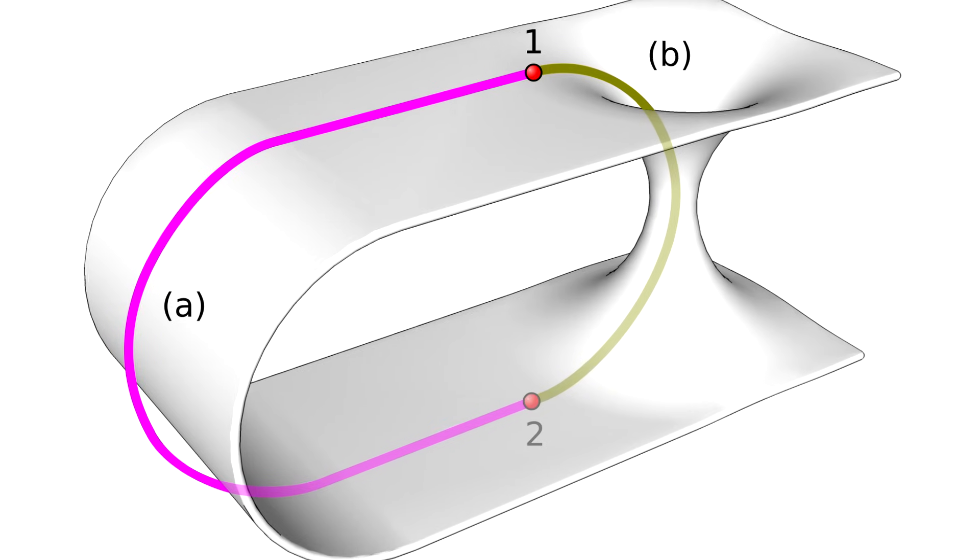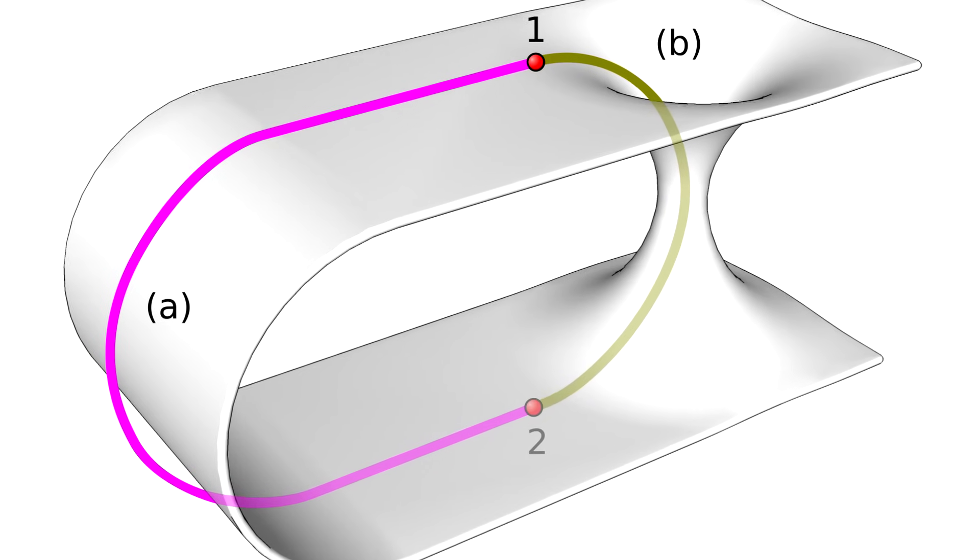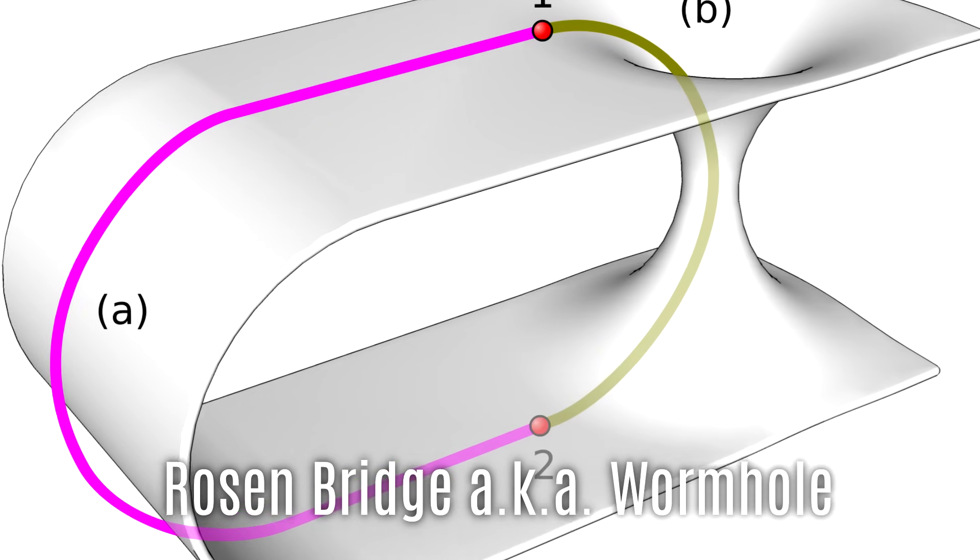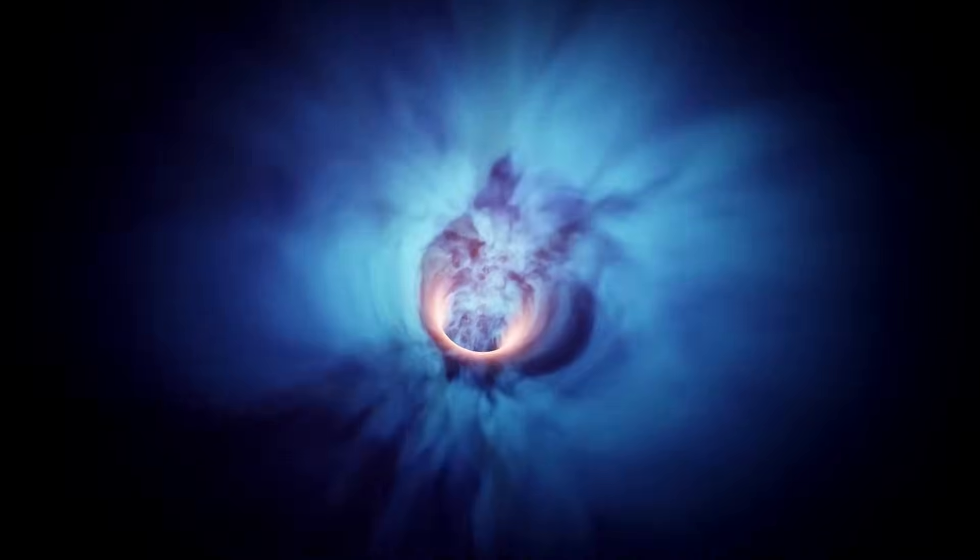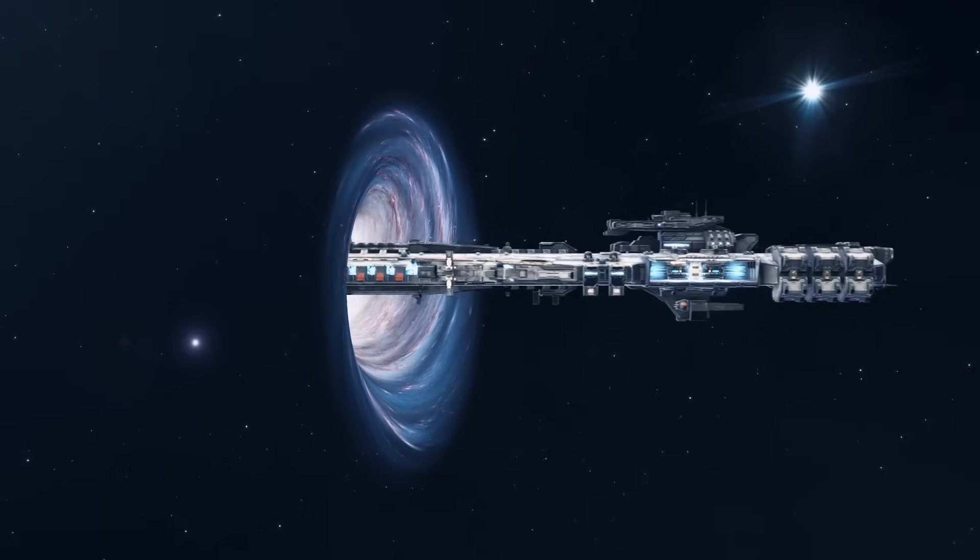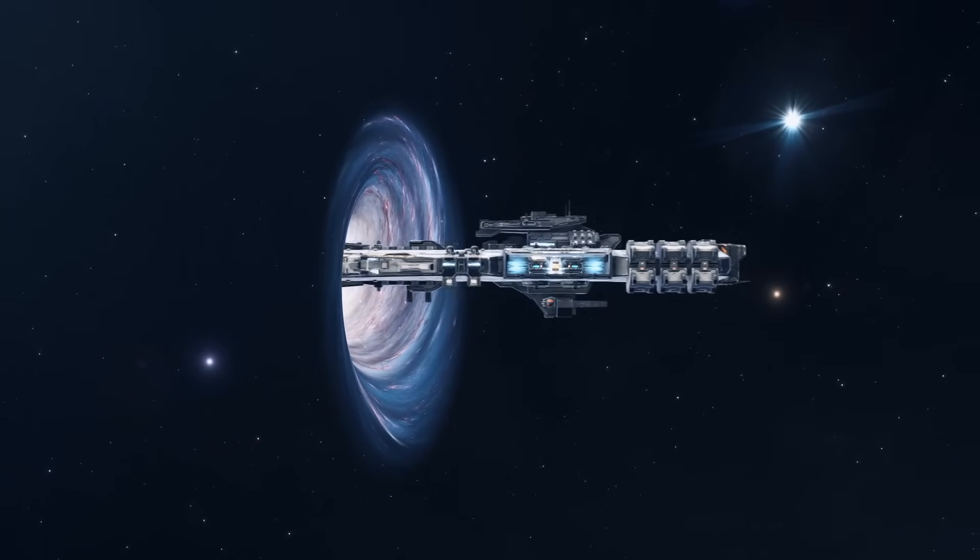But perhaps the most mind-bending prediction of Kerr's theory was the possibility of an Einstein-Rosen bridge, better known as a wormhole. This theoretical shortcut through spacetime could, in principle, connect to distant parts of the universe, or even entirely different universes.